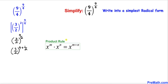Now let's recall the product rule of exponents. So therefore this could be written as (3/2)^4 times (3/2)^(1/2).